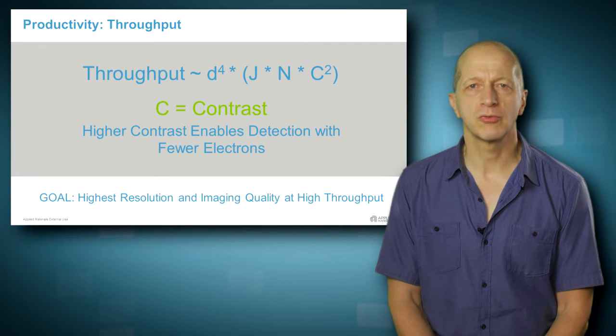Higher contrast enables detection with fewer electrons and results in better throughput because it is possible to scan the e-beam faster. This is why we also focus on optimizing the detection system in our e-beam columns.